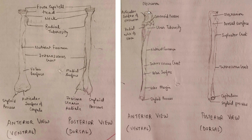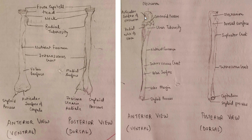For the ulna: olecranon, articular surface of olecranon, coronoid process, radial notch of ulna, ulnar tuberosity, nutrient foramen, interosseous crest, volar surface, volar margin, and styloid process — this is where the radius attaches to the ulna. In the dorsal view: olecranon, dorsal surface, supinator crest, interosseous crest, capitulum, and styloid process.